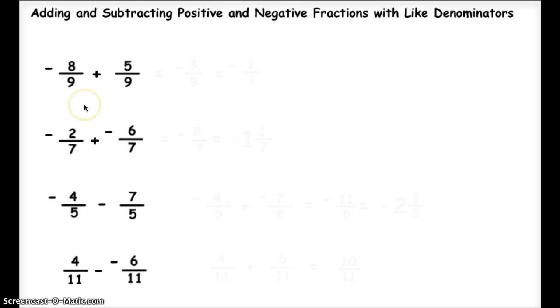So then I ask myself if they work together or against each other. They work against each other, and the negative wins the battle. When they work against each other, I subtract. So when I subtract, my answer is negative 3 ninths.